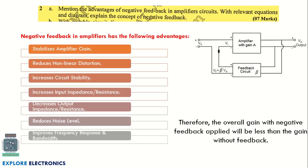The next question asks you to mention the advantages of negative feedback in amplifier circuits, and with a relevant equation and diagram, explain the concept of negative feedback. The advantages include: stabilizes the gain, increases stability of the circuit, and others. You also need to draw the block diagram showing the feedback representation and write the expression for the overall gain: A divided by (1 plus A times beta).